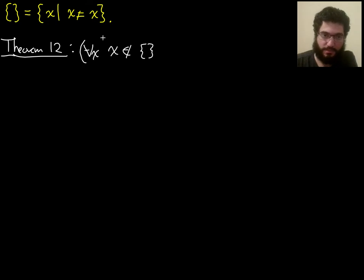So there is an implicit universal quantifier. This is really saying for all x, x is not in the empty set. Or in other words, nothing is in the empty set. Everything is not in the empty set. So nothing is in the empty set.